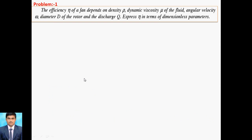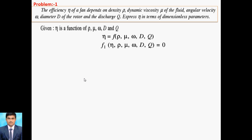Now we go for a problem. The problem states that the efficiency η of a fan depends on density ρ, dynamic viscosity μ of the fluid, angular velocity ω, diameter d of the rotor, and discharge Q. Express η in terms of dimensionless parameters. So we write: η = f(ρ, μ, ω, d, Q), or equivalently f(η, ρ, μ, ω, d, Q) = 0. Total number of variables n = 6 (η, ρ, μ, ω, d, Q).